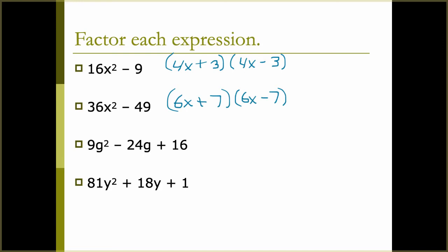Next, we have 9g² - 24g + 16. We verify there is no GCF. We have 9g² and 16 for our first and last terms — both are perfect squares. The square root of 9g² is 3g, and the square root of 16 is 4. We match the sign of the middle, giving us the binomial squared: (3g - 4)². To verify, multiply 3g times -4 to get -12g; doubled, that's -24g, which matches the middle.